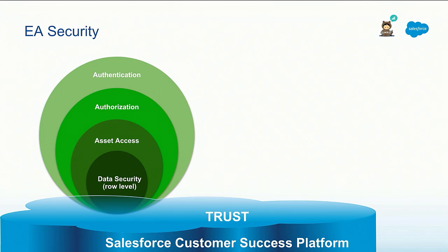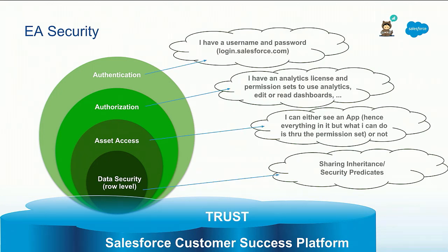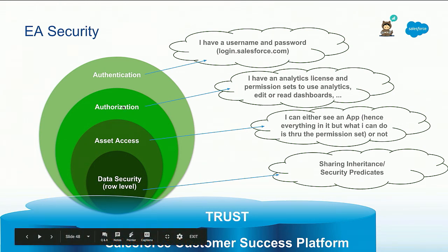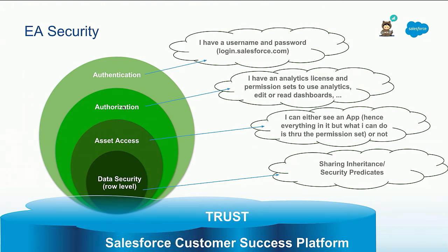In general, in the analytics world, if you look at the different layers of security, you will find first authentication and authorization. Authentication is having a username and a password, which we get from Salesforce simply by being a Salesforce user. Authorization is whether you have the permission set license and the permission sets — the license gives access to about 12 or 13 permissions, determining what you can do with the product once logged in.